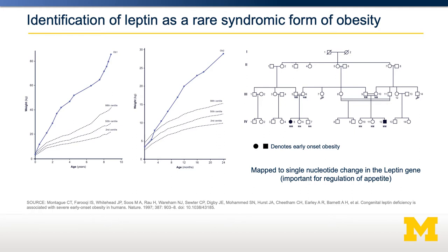These individuals gained excessive weight — about 90 kilograms by the time they were 10 years old. By comparing the genetics of these two individuals to their unaffected siblings, researchers were able to locate mutations in a particular gene called leptin as causal of their syndromic form of early onset obesity.